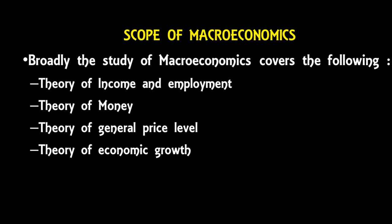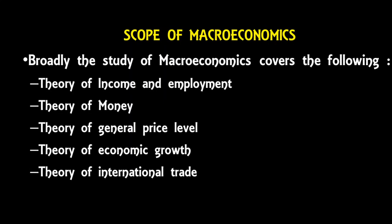The fifth area is the theory of international trade. There are several trade theories that try to answer why and how nations trade and benefit from trade. There are two main categories: classical or country-based theories, and modern or firm-based theories. Under classical or country-based theories we have mercantilist theory, absolute cost advantage given by Adam Smith, comparative cost advantage by Ricardo, and the Heckscher-Ohlin theory.